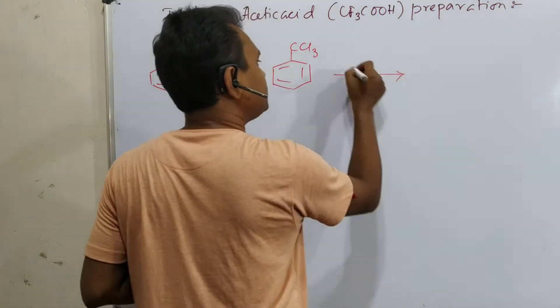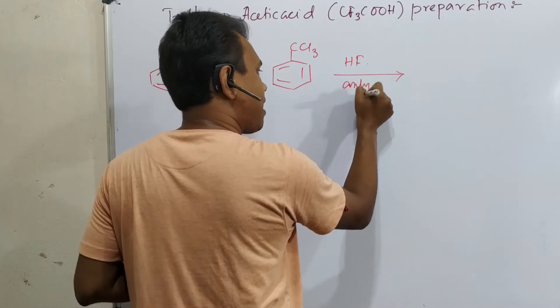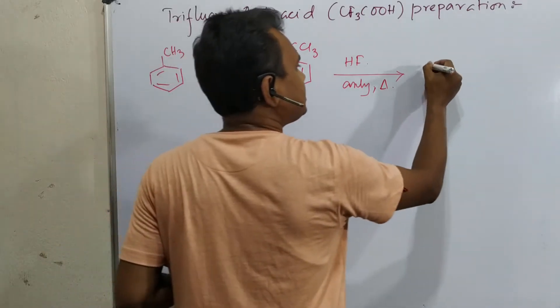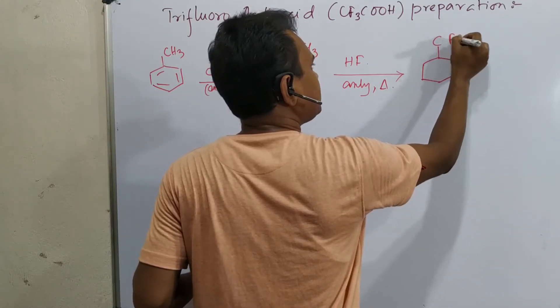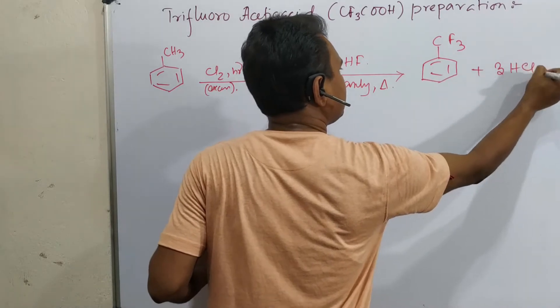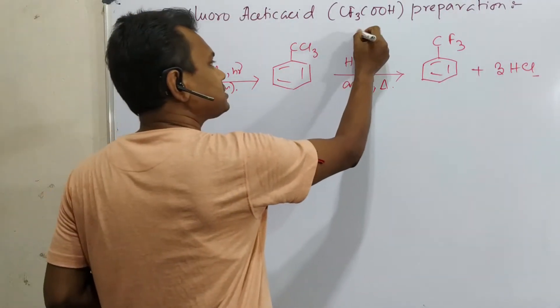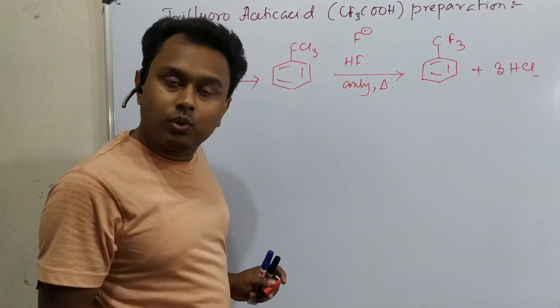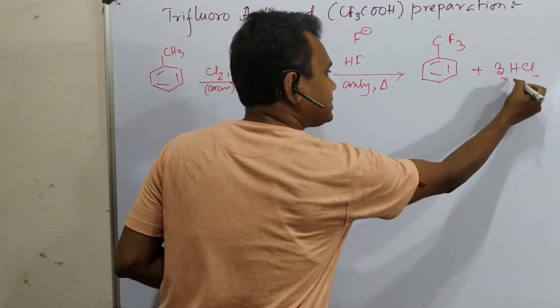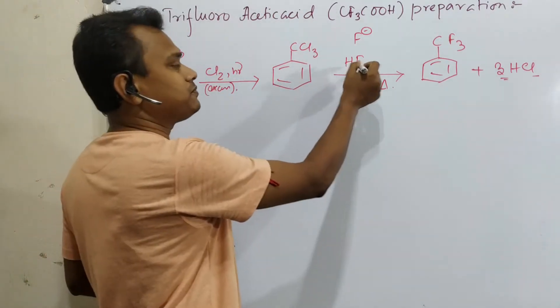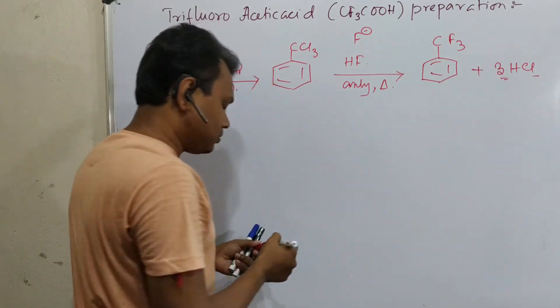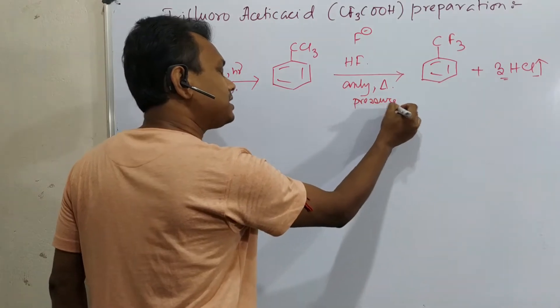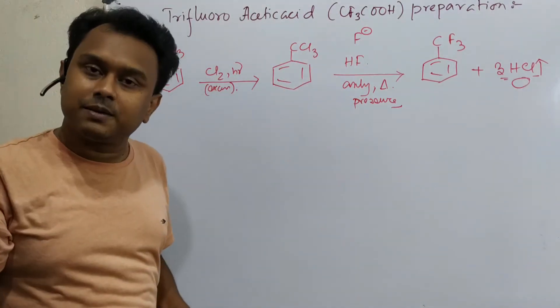By the way, I want to mention that instead of h nu, if you take any Lewis acid like Fe3+ or Al3+, the chlorination will happen on the SP2 CH. Please remember this difference. Radical condition always results in benzyl halide substitution, means benzyl CH substitution. Next step, if you react this with anhydrous HF under high temperature about 150 degrees and pressure, this is maintained by taking HCl out of the system.